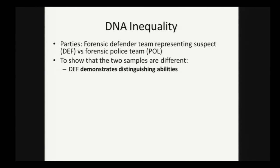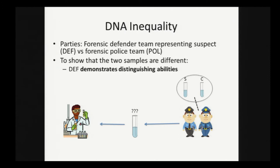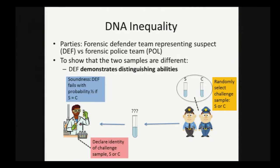To show that the two DNA samples are different, for our first protocol we employ a very simple technique, which is essentially the idea of the graph non-isomorphism zero-knowledge protocol from the digital context. If they're different, the defender should be able to distinguish between them. The police will randomly select a challenge sample, hand it to the defender, and the defender should declare the identity. If they are the same, the defender should fail with probability one-half.